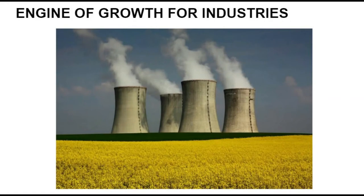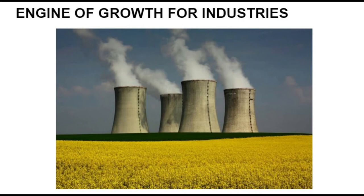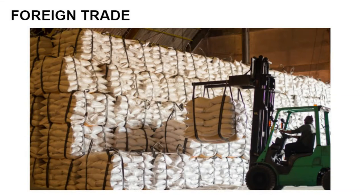Agriculture acts as the engine of growth for industries in two ways. First, agriculture can provide raw materials for industries — for example, a ketchup company needs tomatoes from the agricultural sector. Second, there needs to be demand for industrial goods. When industries are developed, agriculture provides employment to rural people, giving them sufficient purchasing power for efficient demand for industrial goods. Development of the agricultural sector also increases scope for foreign trade.